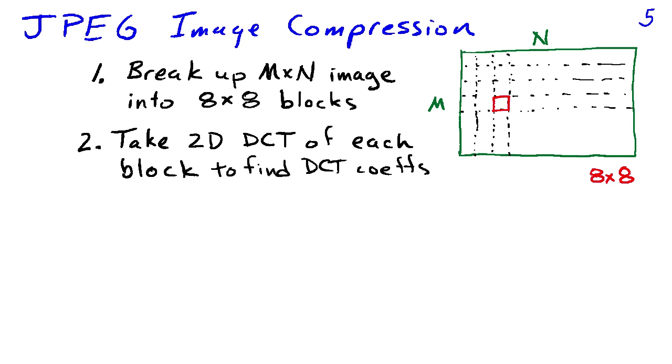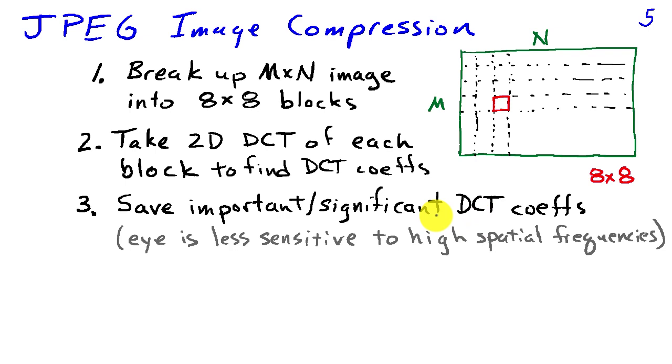Then, for each block, we take the two-dimensional discrete cosine transform to find the DCT coefficients corresponding to that block. And we save the important and significant DCT coefficients.